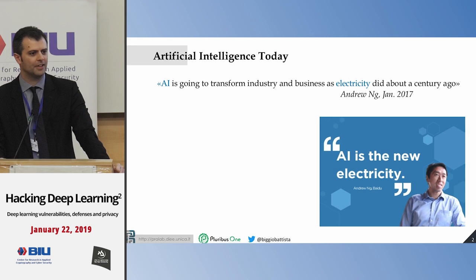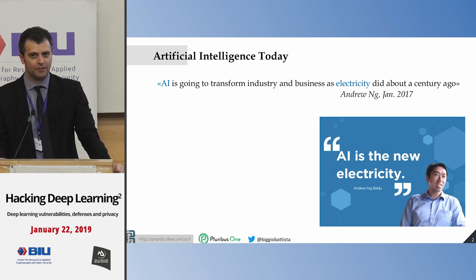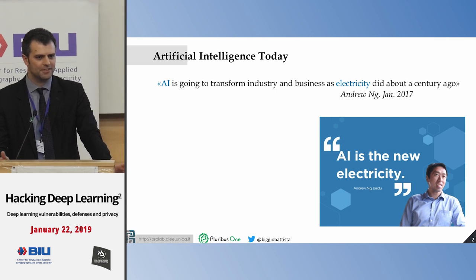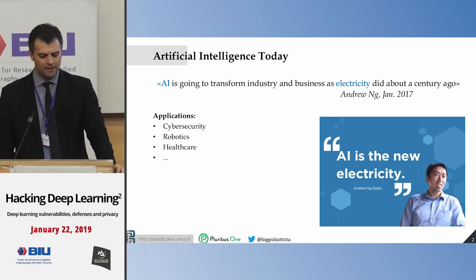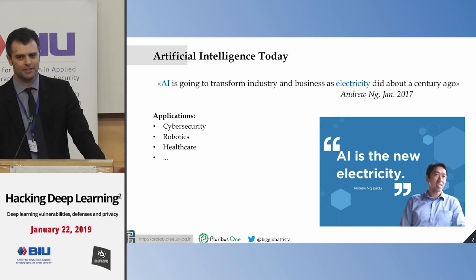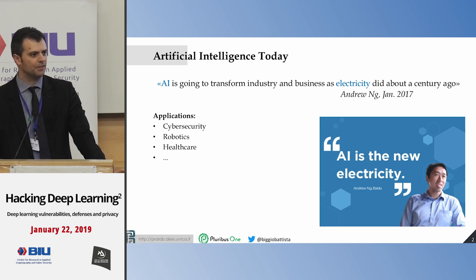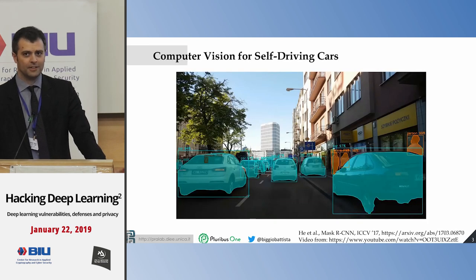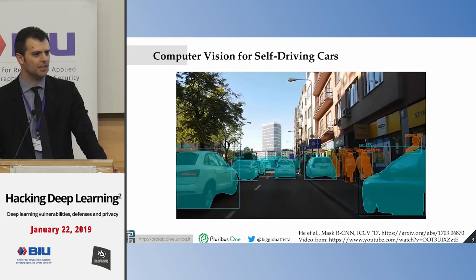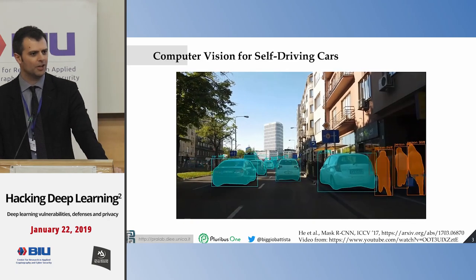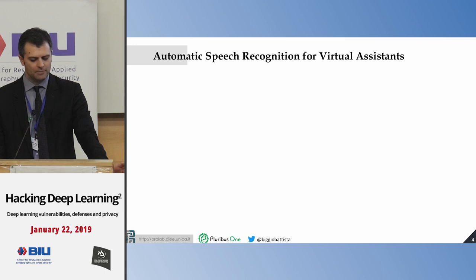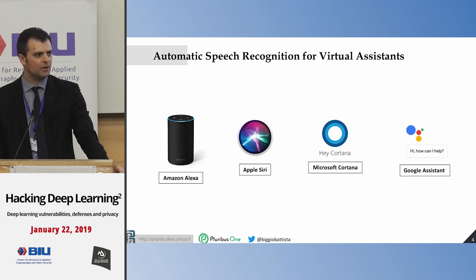I'd like to start by quoting Andrew Ng, a prominent researcher in AI and machine learning, who defined AI as the new electricity for businesses and applications. We've recorded a lot of success in different application areas like cybersecurity, robotics, and healthcare. We have cars that can see the world around them, recognizing other cars, pedestrians, and traffic signs, and we have assistants on our phones like Amazon Alexa and Siri. Everything seems to work perfectly fine in these benign settings.